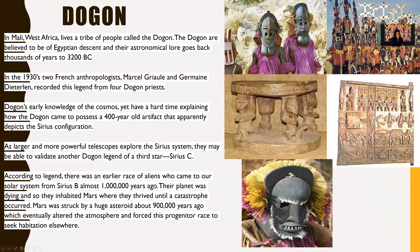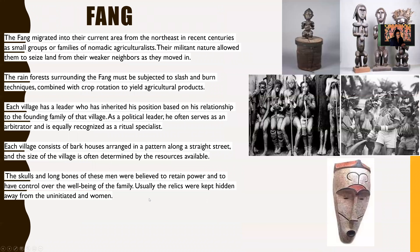The next tribe we want to look at is the Dogon. The Dogon tribe lives in West Africa. One interesting thing about this particular tribe is that they really have a lot of interesting symmetrical masks. They also have different legends, which you can read about, making it a fascinating tribe to look at.